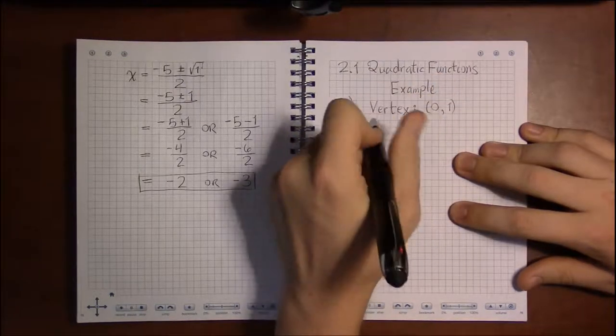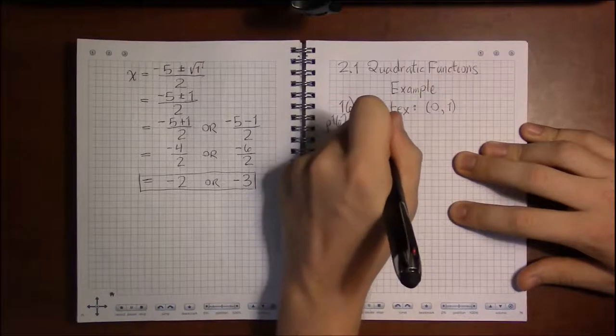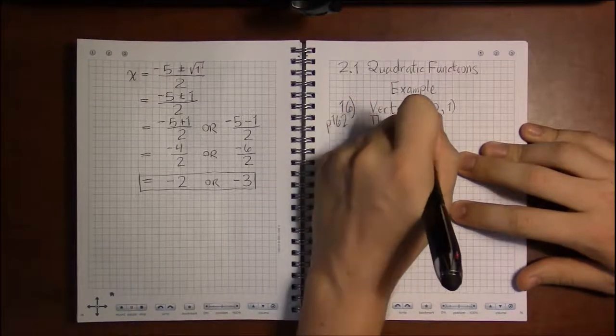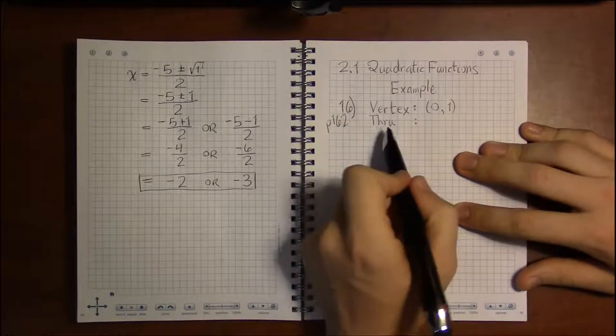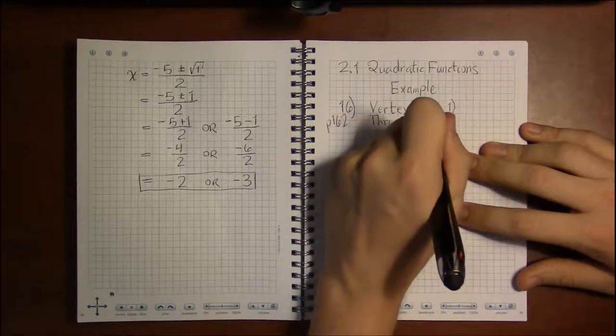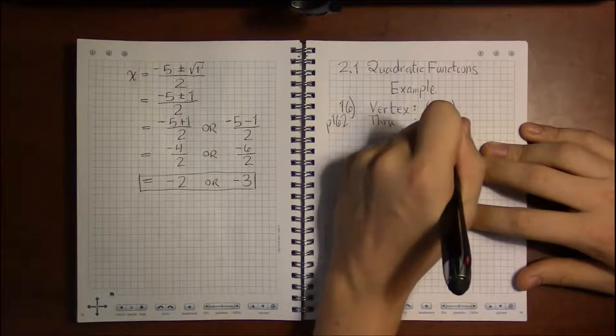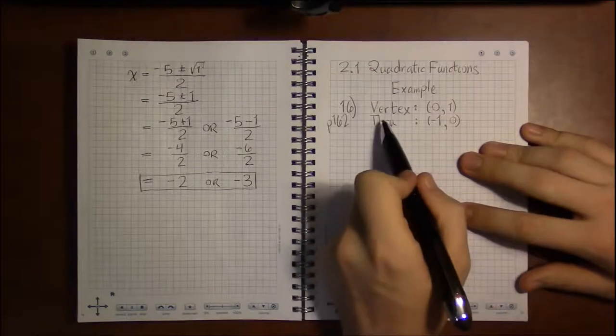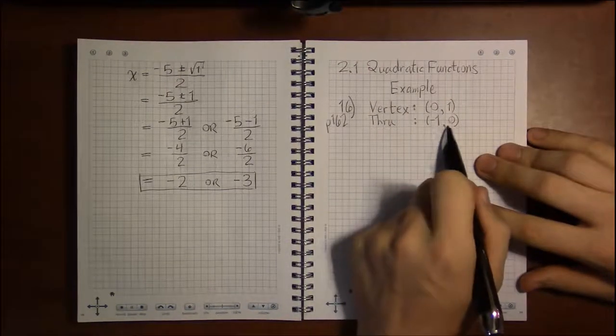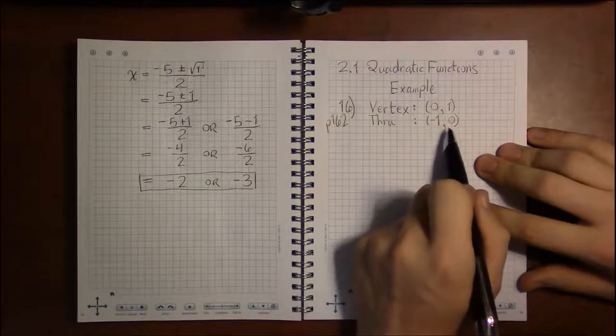We're told in this case, on problem 16 which is located on page 162, that the vertex of our parabola or quadratic is located at (0, 1) and our quadratic passes through the point (-1, 0).